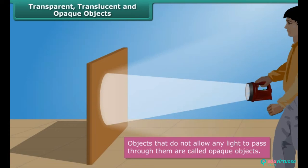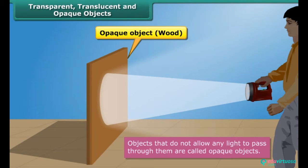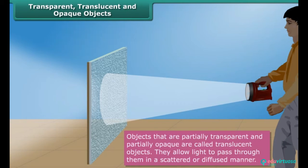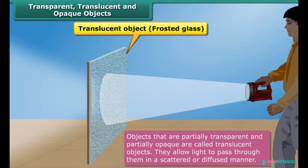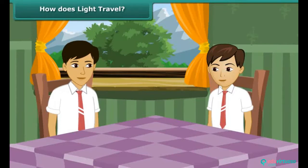Objects that do not allow any light to pass through them are called opaque objects. As a result, we cannot see through them. When light falls on an opaque object, its shadow is formed on the other side of it. Wood, sheets of metal, dark colored plastics, and rocks are examples of opaque objects. Objects that are partially transparent and partially opaque are called translucent objects. They allow light to pass through them in a scattered or diffused manner. Frosted glass, tracing paper, and greased paper are examples of translucent objects.